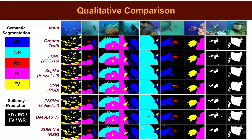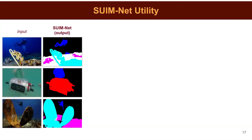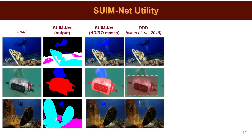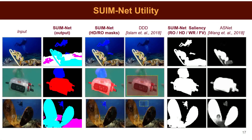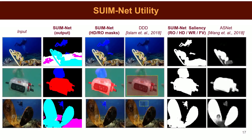We further demonstrate the effectiveness of SWIMnet-generated segmentation masks for pixel-level detection of human divers and robots. It provides more precise object localization compared to standard bounding box detectors such as DDD. Additionally, the semantic knowledge can be used to generate improved saliency maps. Class-agnostic saliency detectors such as ASNet only pay attention to high-contrast foreground regions, whereas SWIMnet can be configured to pay attention to specific object categories in the image, which is more useful in general.